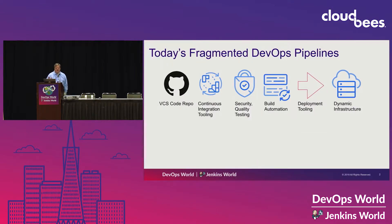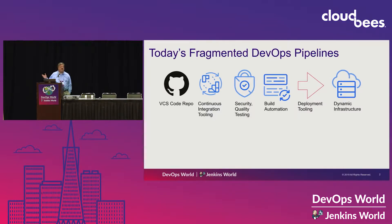Let's talk a minute about fragmented DevOps pipelines. You've got your version control system on the left, continuous CI tooling, security and quality testing, build automation, deployment tooling, and then you've got a dynamic infrastructure that is becoming more dynamic by the day as we do Elastic Clouds and Kubernetes.